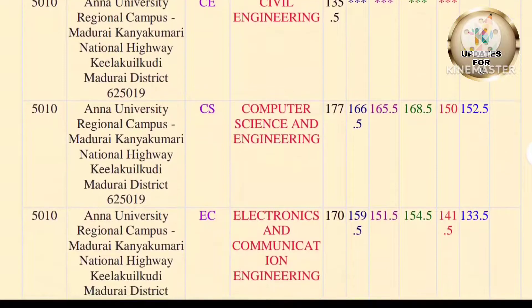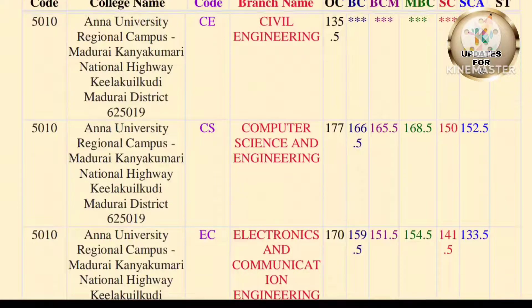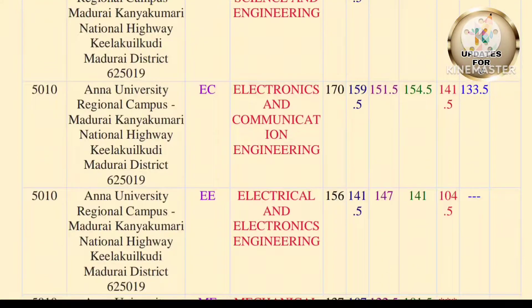Next, Electronics and Communication Engineering. OC: 170, BC: 159.5, BCM: 151.5, MBC: 154.5, SE: 141.5, SE: 133.5. This is the average cutoff. Next, Electrical and Electronics Engineering. OC: 156, BC: 141.5, BCM: 147, MBC: 141, SE: 104.5.